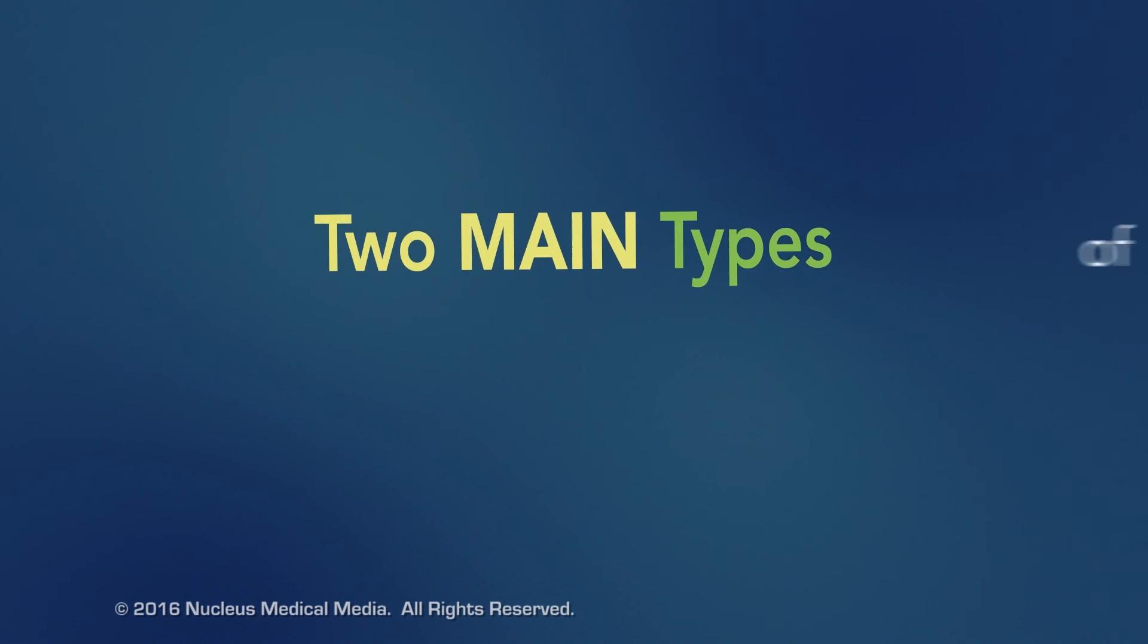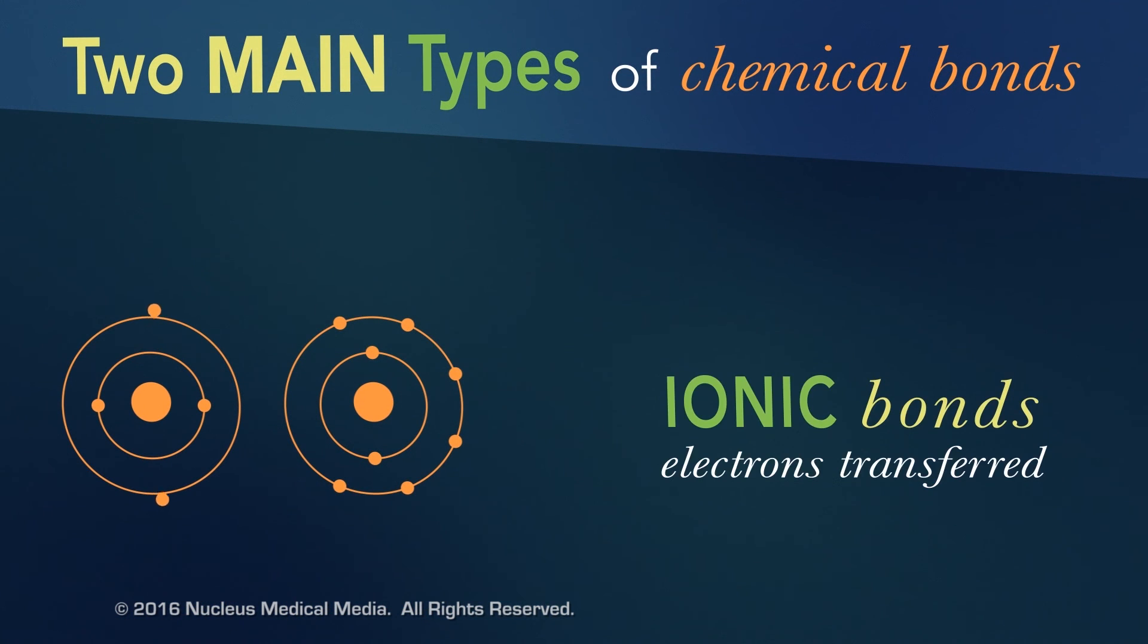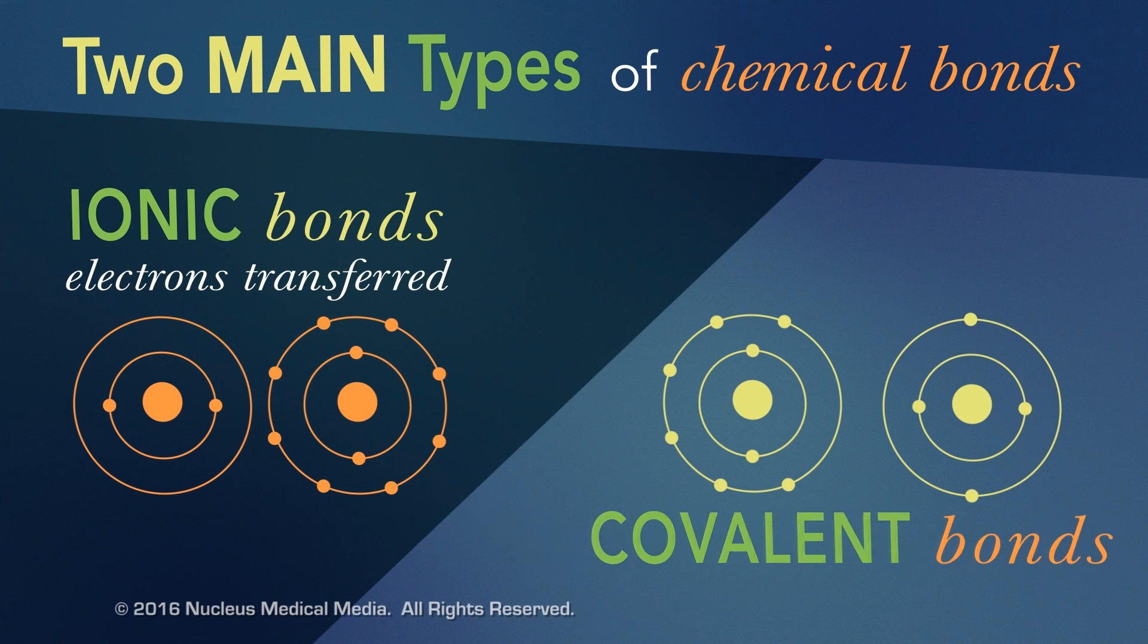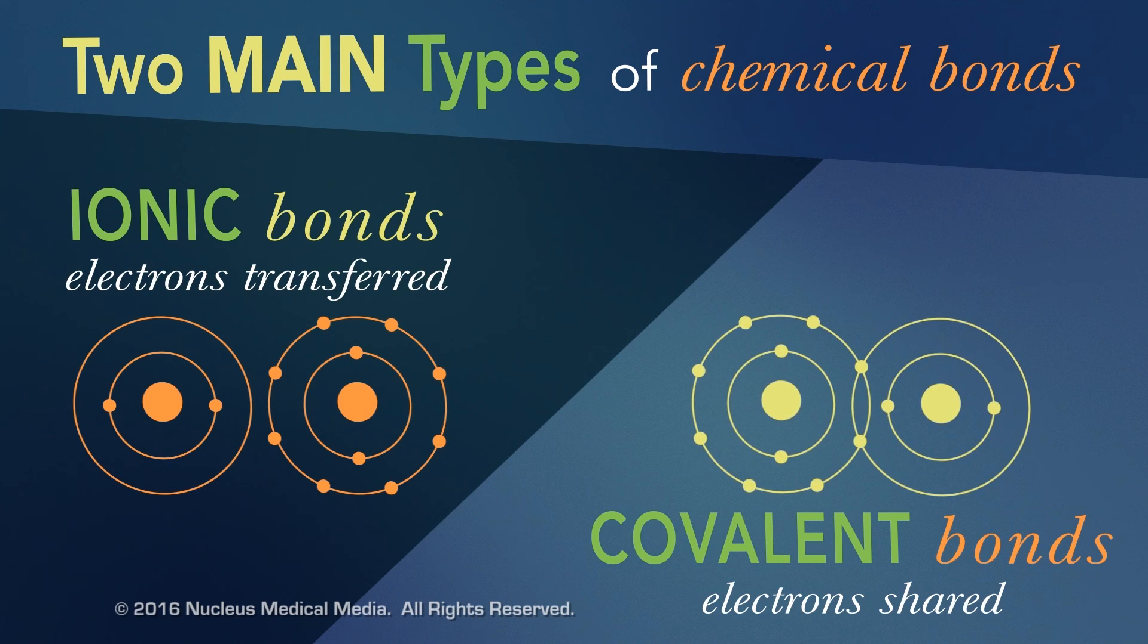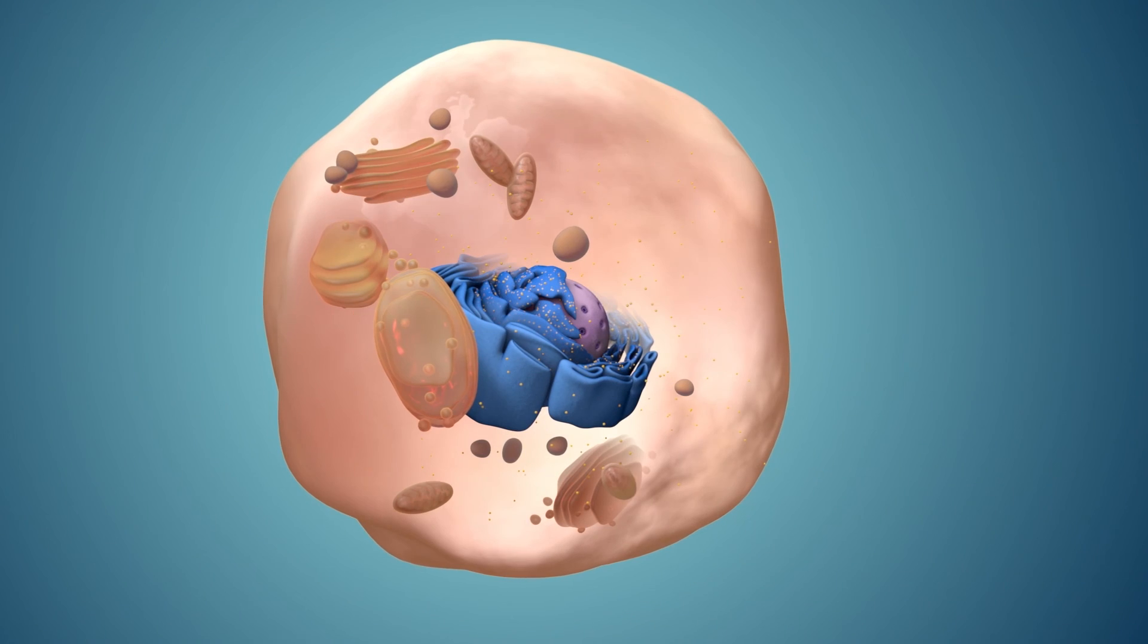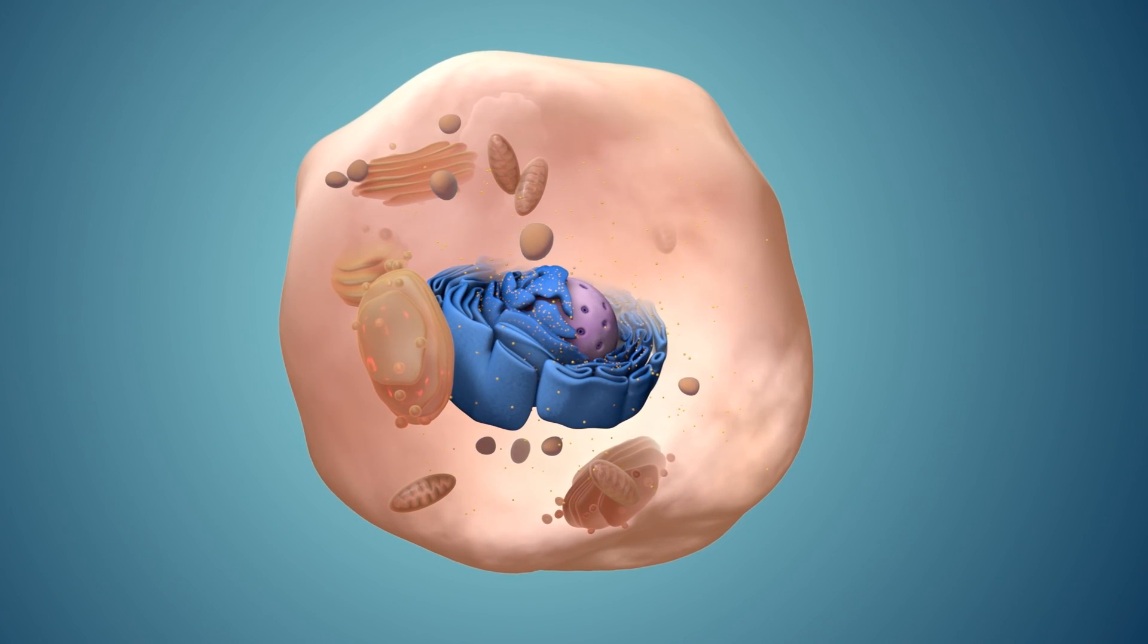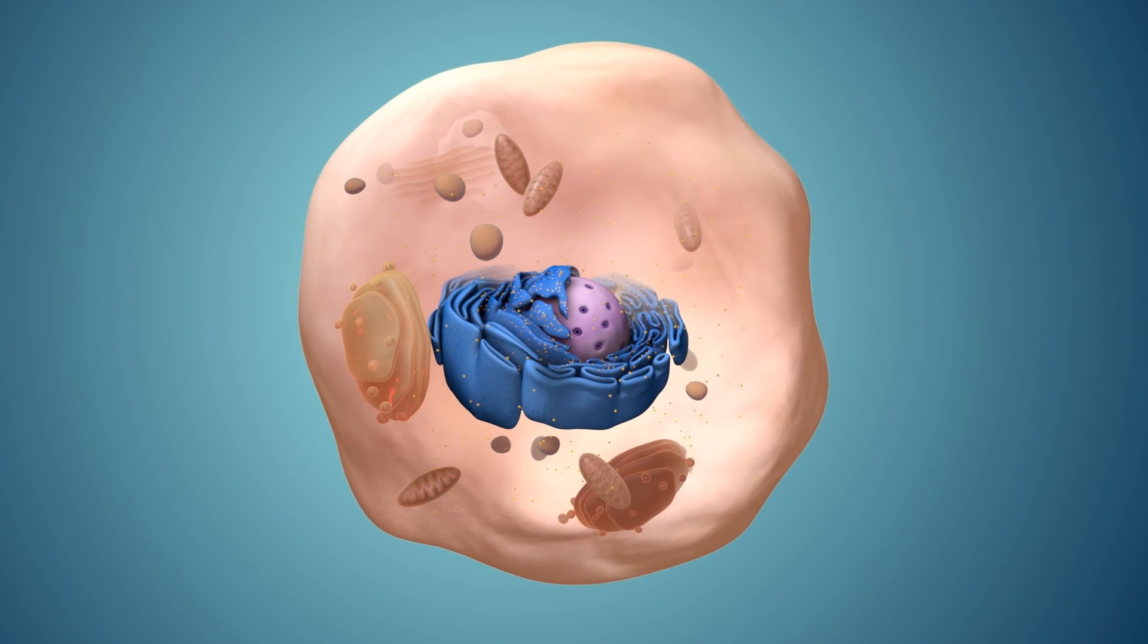There are two main types of chemical bonds. They are ionic bonds, when electrons are transferred from one atom to another, and covalent bonds, when atoms share electrons. We'll discuss these in more detail separately. We'll see you next time.